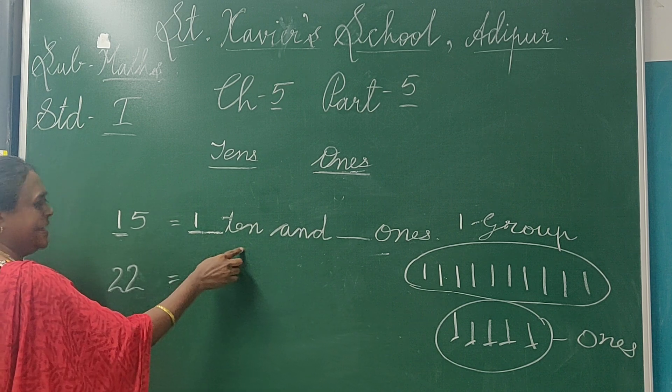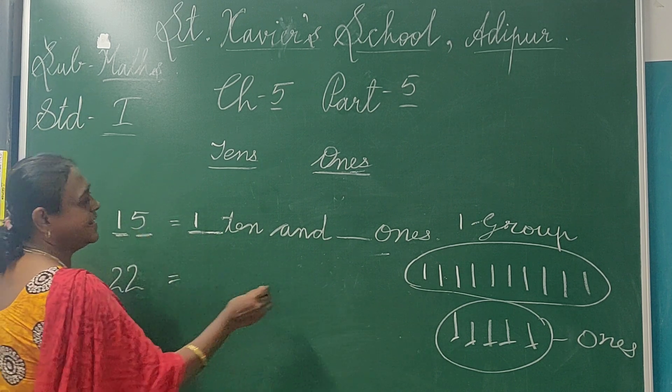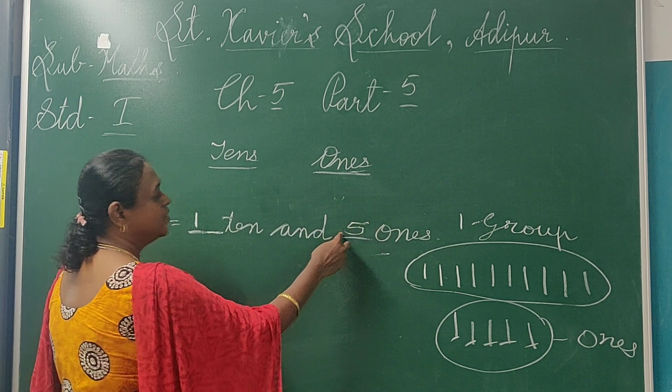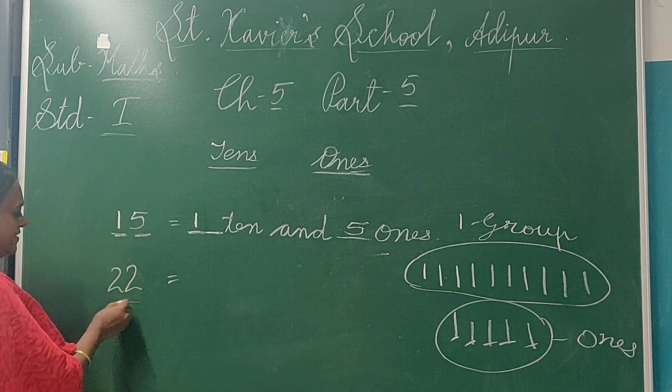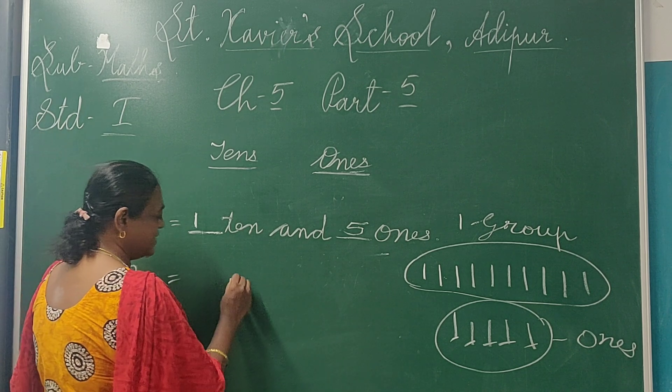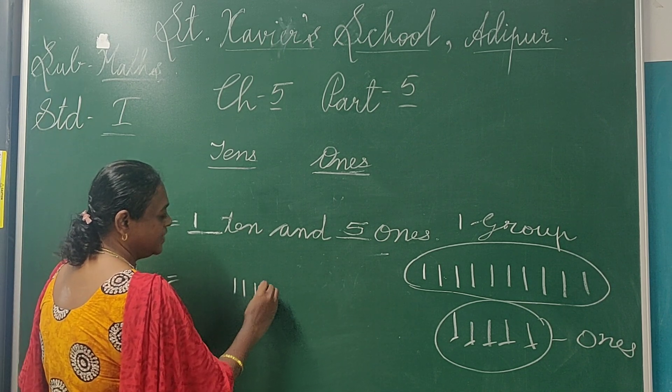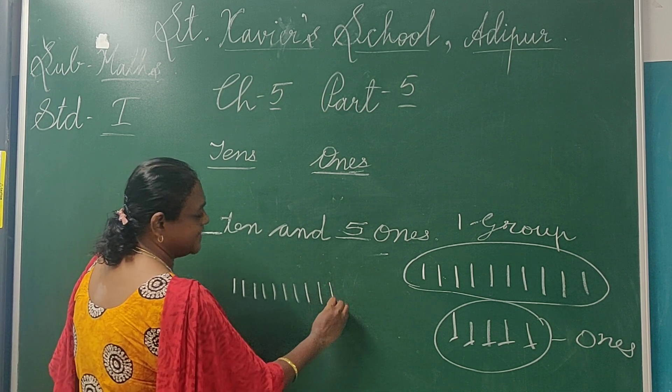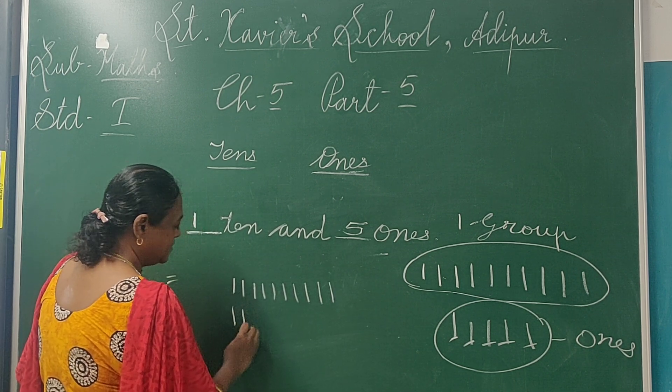1 ten and 5 on right side, that is ones, so we write like this 5 ones. Okay, now this is 22. Now we make lines: 1, 2, 3, 4, 5, 6, 7, 8, 9, 10. Okay, 1, 2, 3, 4, 5, 6, 7, 8, 9, 10.